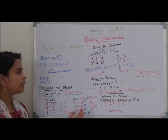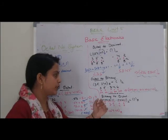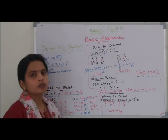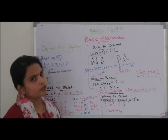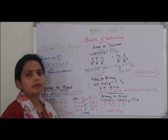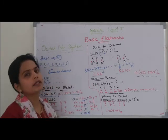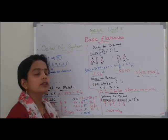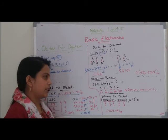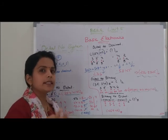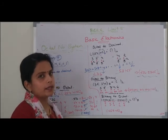अब हम binary to octal conversion पढ़ेंगे। हमें binary number दिया होगा जिसे octal में convert करना है। जो process अभी हमने octal to binary convert करने की निभाई, हम इसमें just opposite करेंगे। सबसे पहले हम 3-3 की pairing करेंगे।